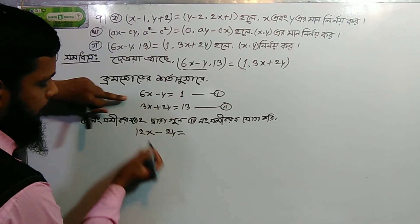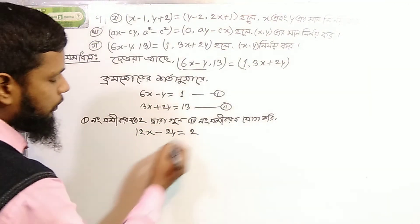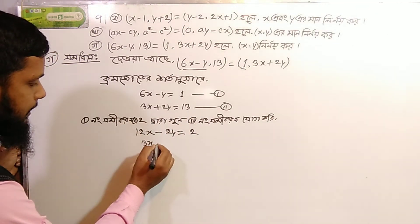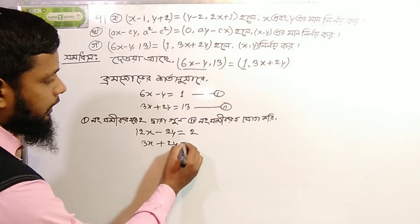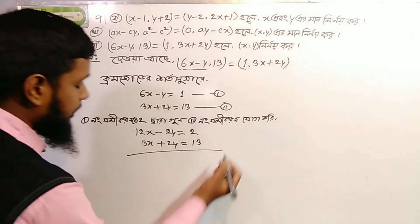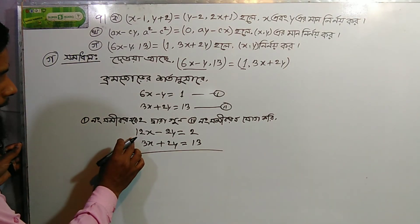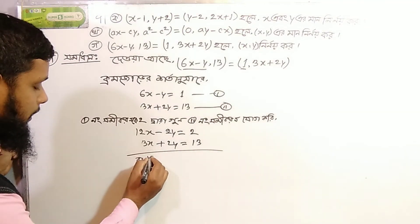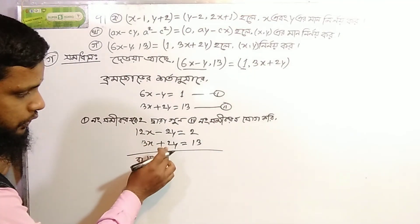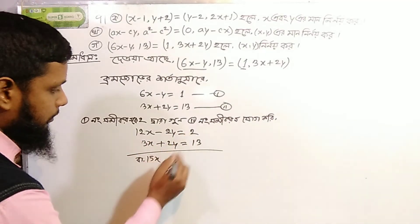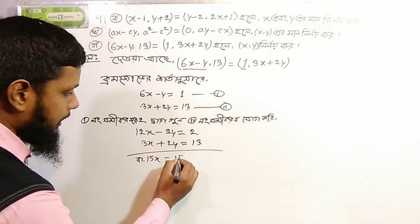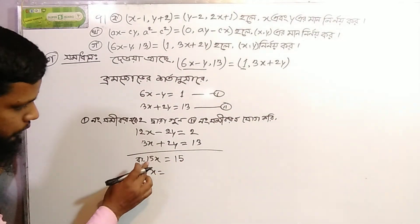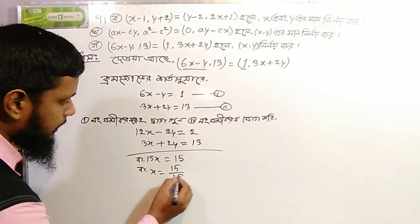So 3x plus 2y equals 13. Now we multiply through: multiplying gives 15x. Eliminating 2y plus 2y cancels out. The result is 15x equals 15, so 15 divided by 15 equals 1.